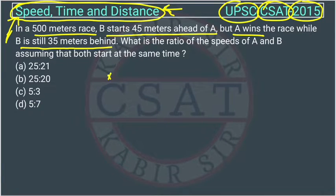So what is happening? Let's see. This is the starting point and this is the final ending point. So here, B is ahead of A by 45 meters, so the distance between A and B is 45 meters and the total distance is 500 meters.